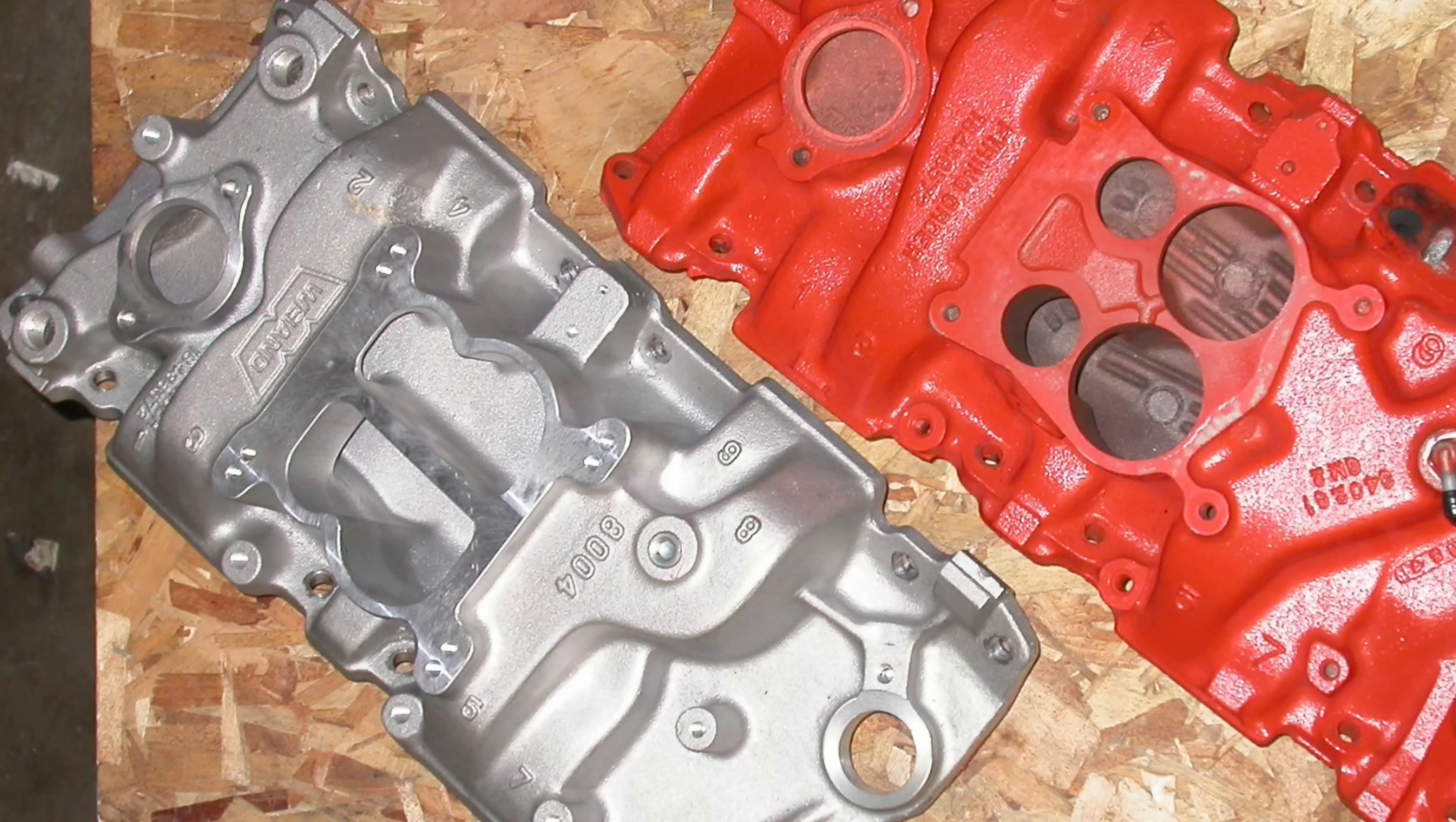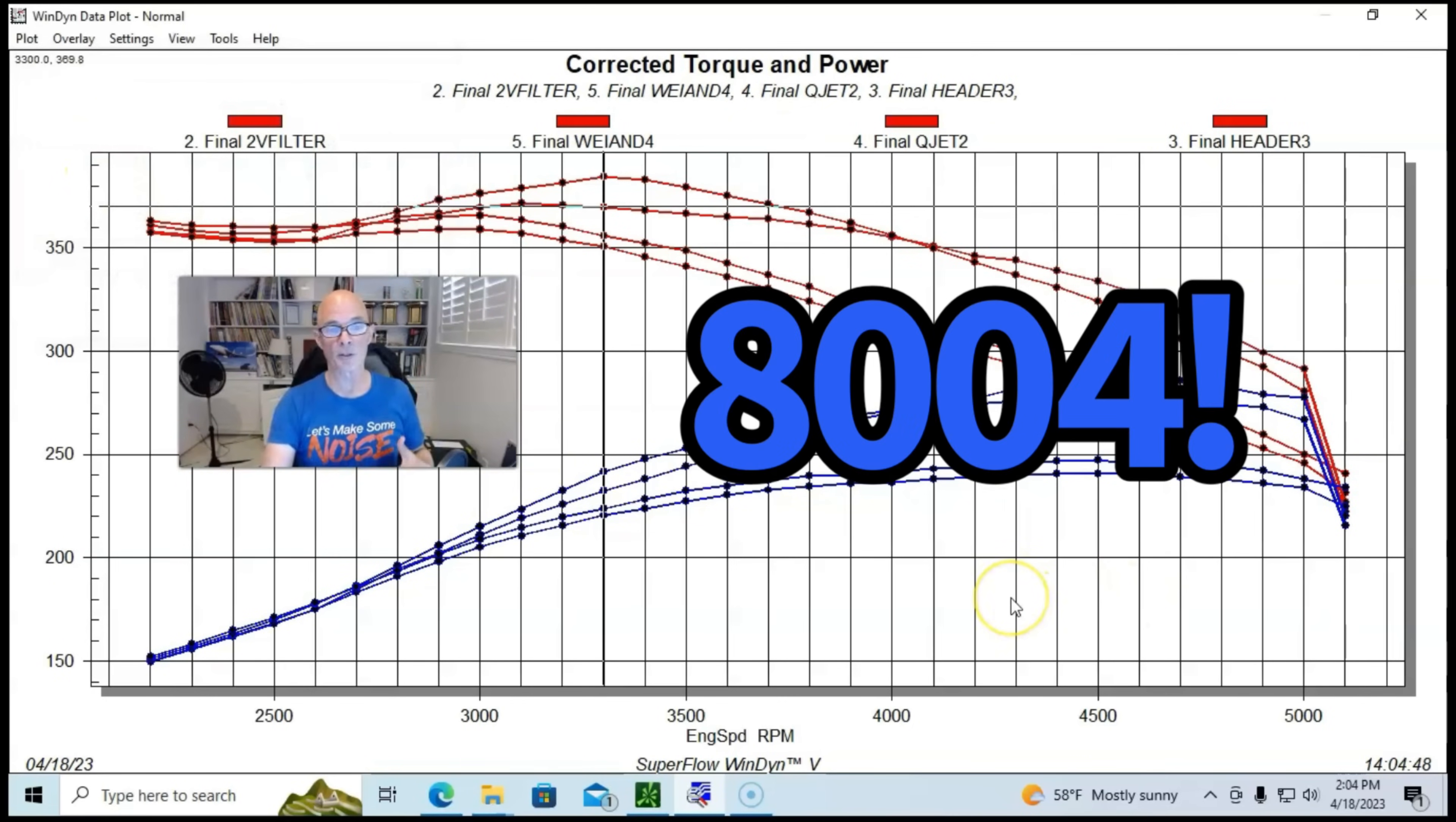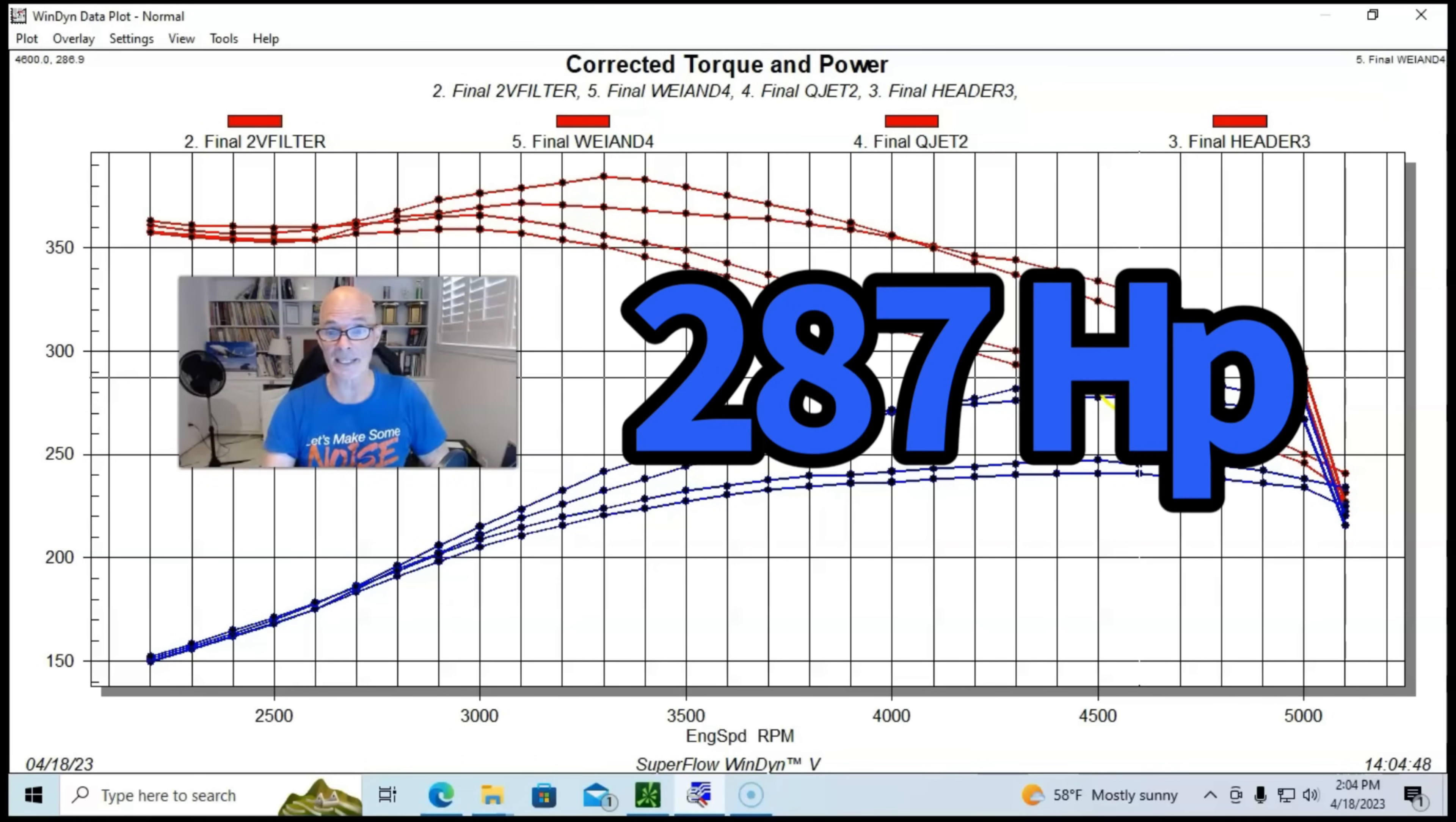In fact, for mileage and drivability it's really hard to beat a Quadrajet. We're making good power there, but we wanted to do what everybody else would do - if you have a cast iron Quadrajet manifold, the one thing you'd want to do is put some kind of aluminum intake manifold on there. So we put a Weiand four-barrel stealth intake manifold.